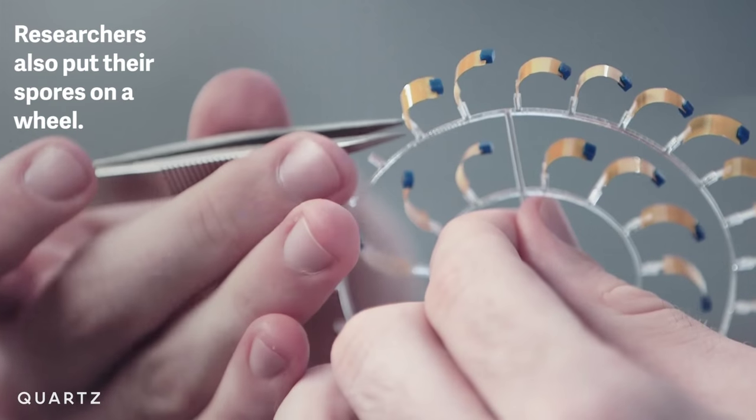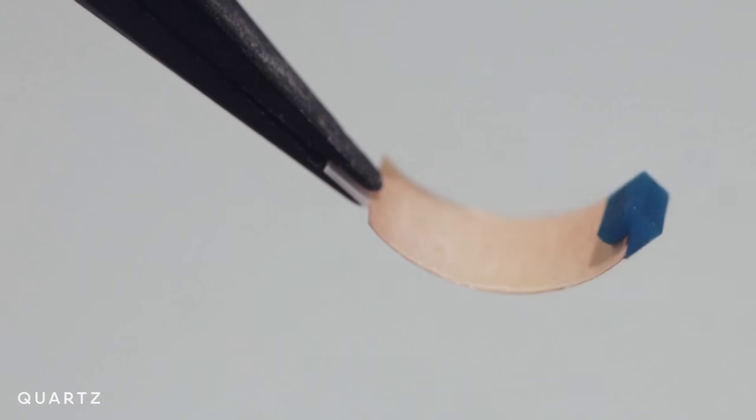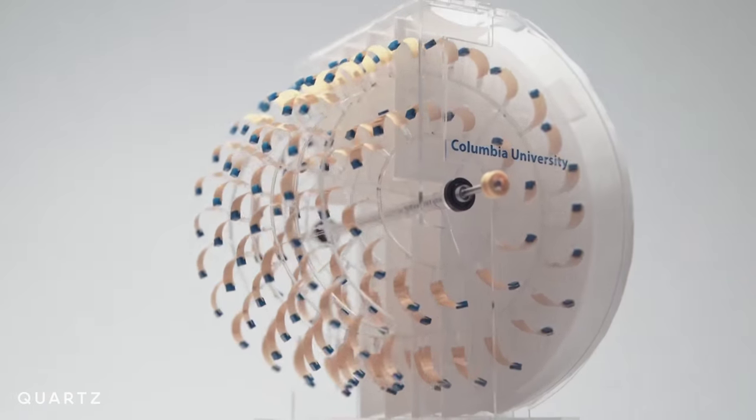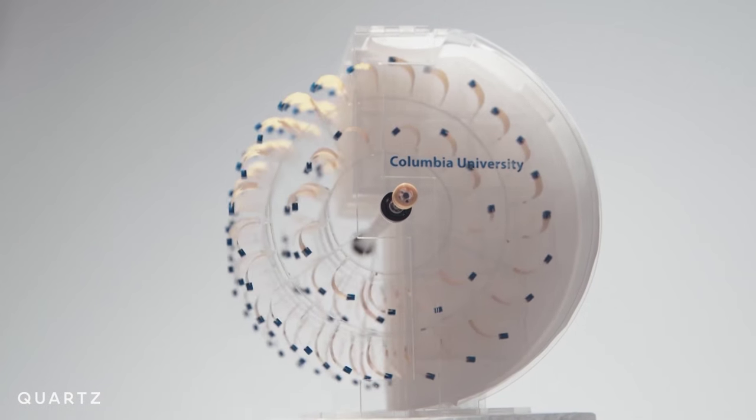Half of our wheel is placed into a humid environment and half of it into a dry environment. Because our spores are expanding when humidity is high and contracting when humidity is low, that means you have a very tiny mass imbalance on the wheel which causes it to push forward.